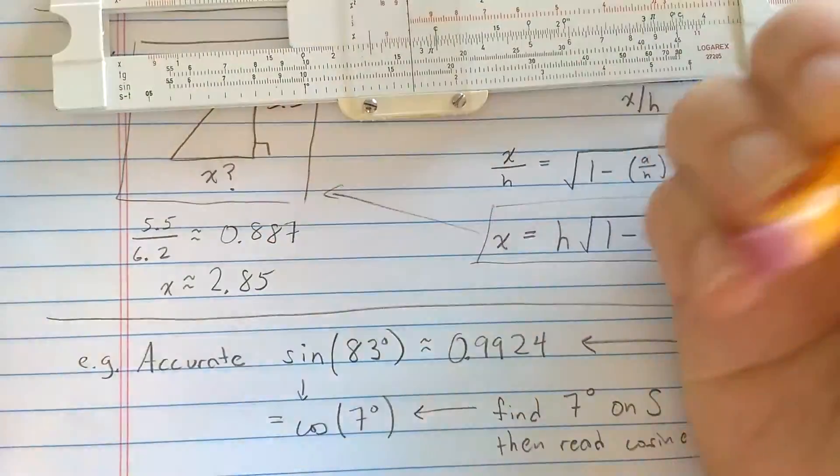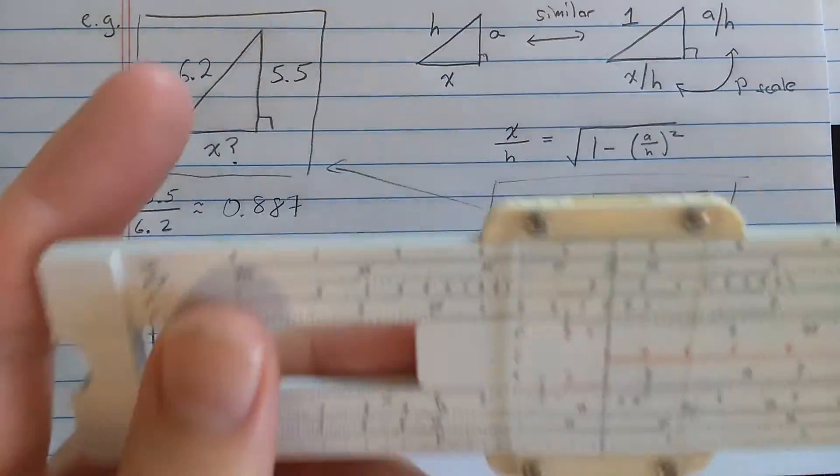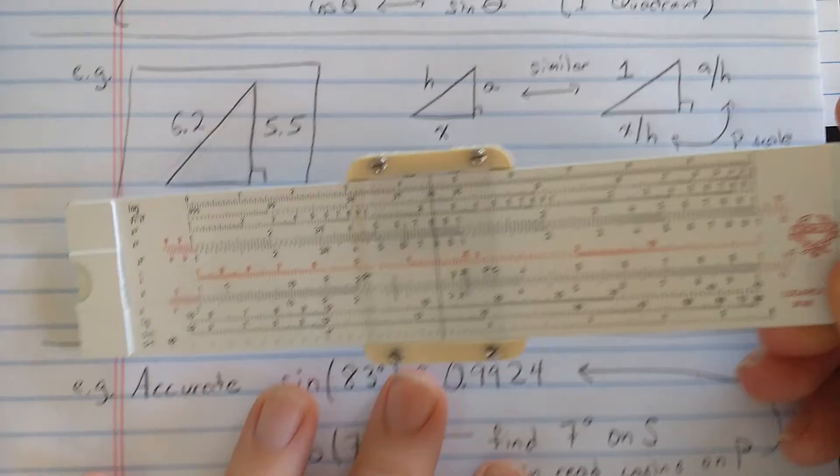So to do that I'm going to use the CI scale, which is red on this slide rule. Found the 6.2, going to the end, and reading result here on the D scale. There's 2, 5, 6, 7, 8, so before I estimated this at about 2.85, looks like what we got.